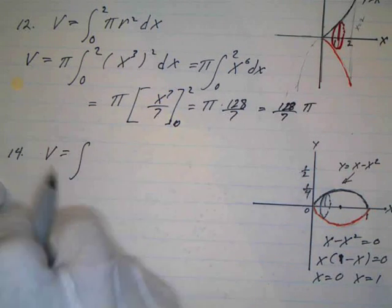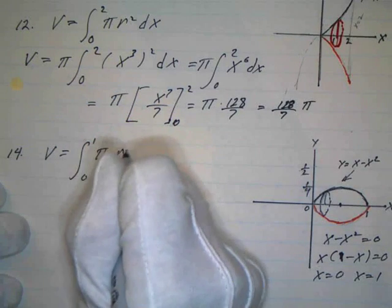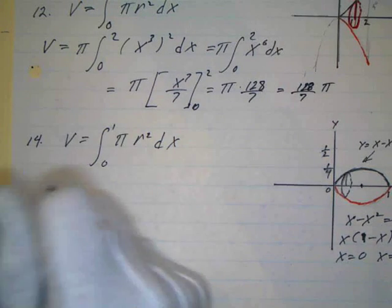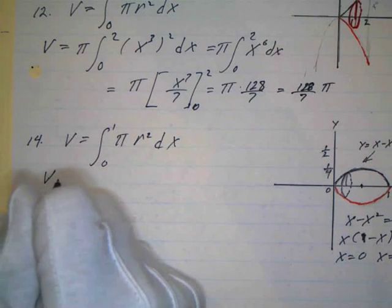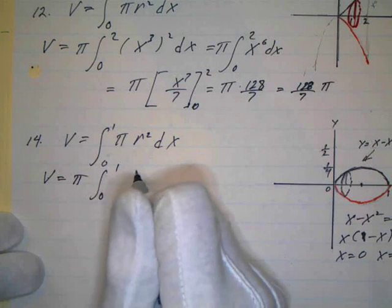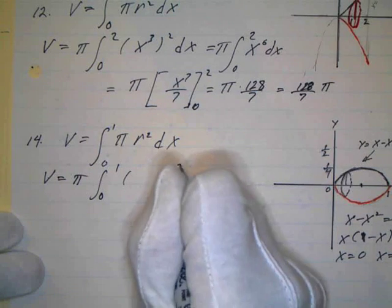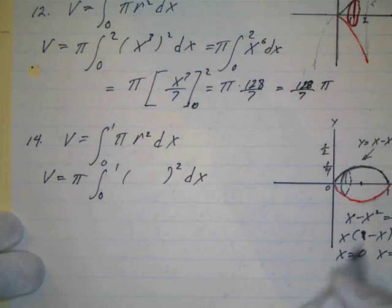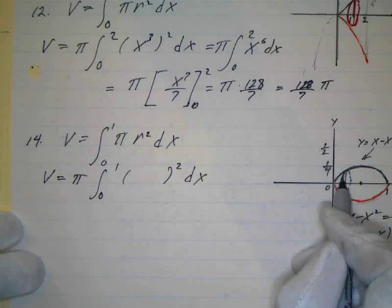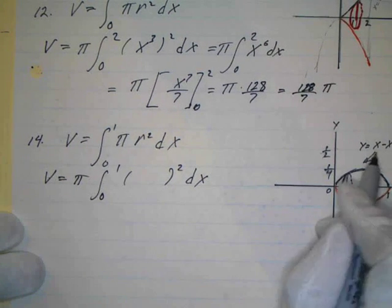So again, volume equals, in this case it will be from 0 to 1. Pi r squared dx of this method. I'll bring the pi out in front again. So pi times the integral from 0 to 1 of r squared. This is a little more complicated because my radius is going to be given by the height, which is the value of the function at any point x. Remember, it's a function of x. So as these go from left to right, this will change.